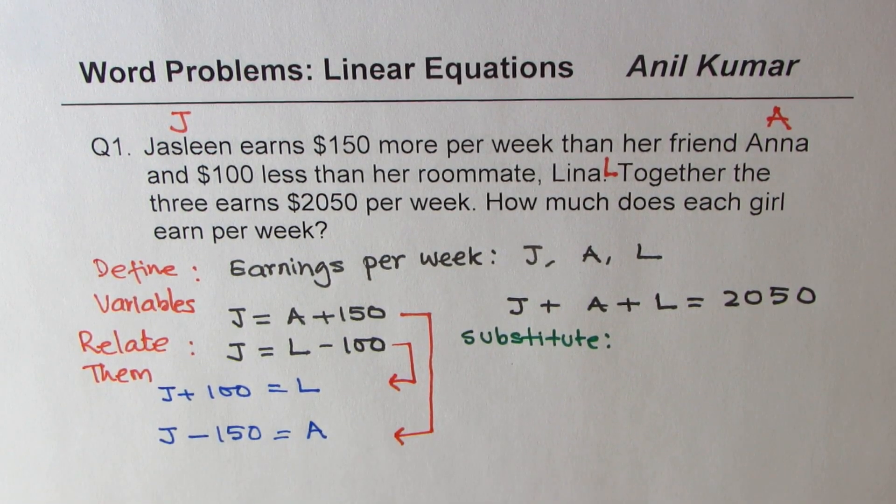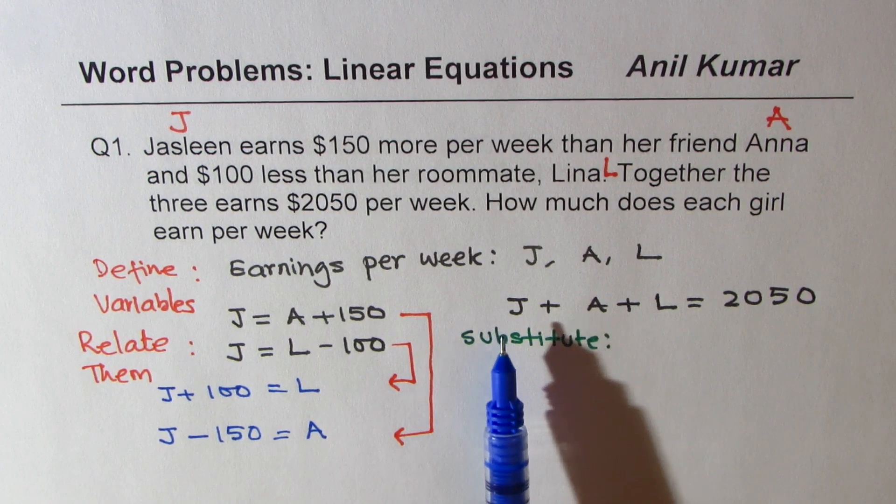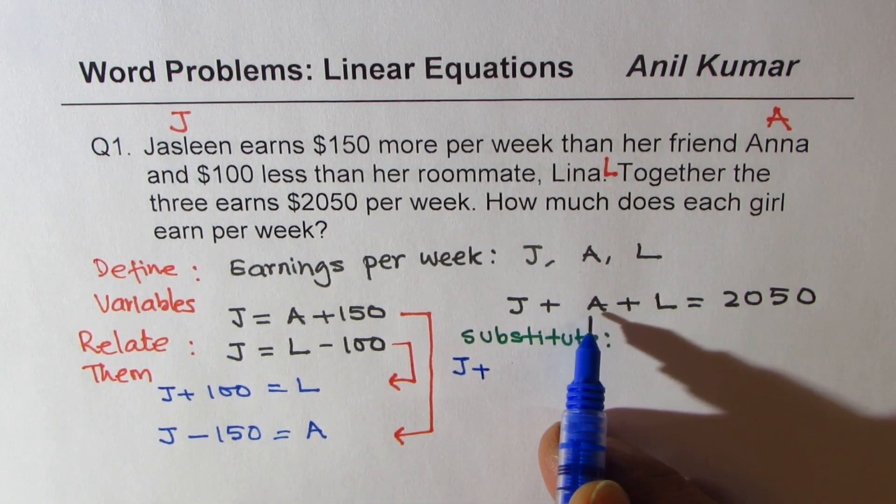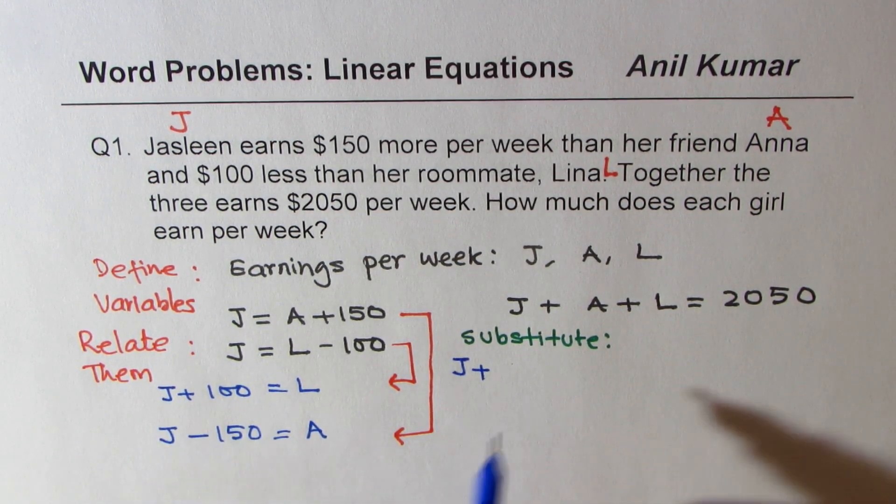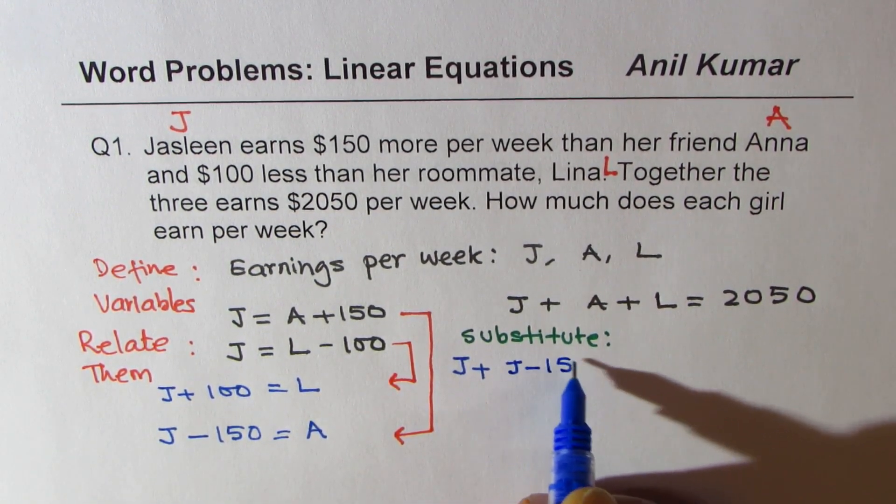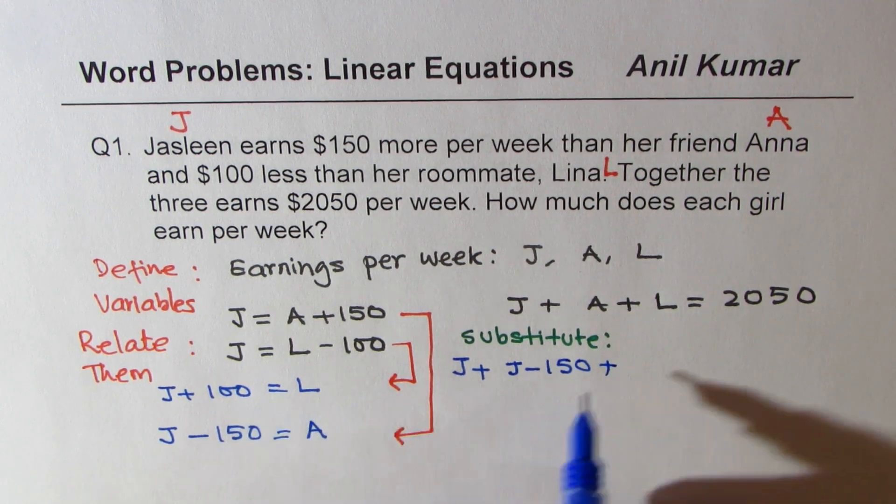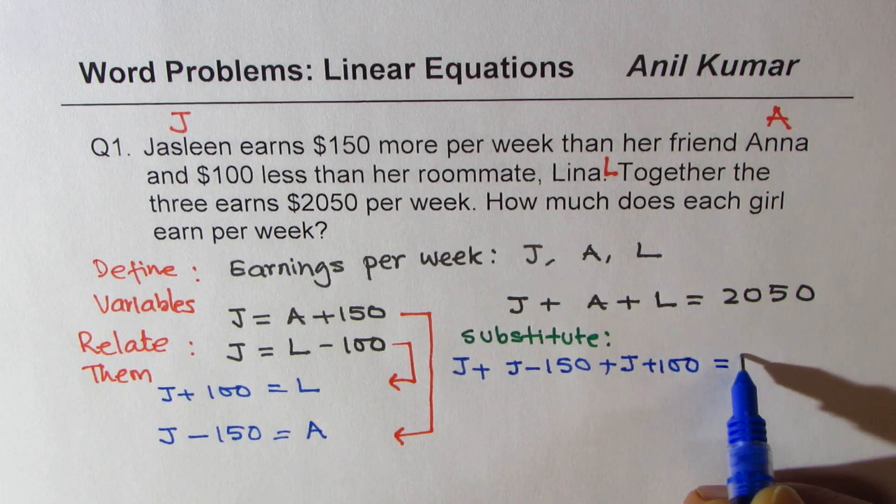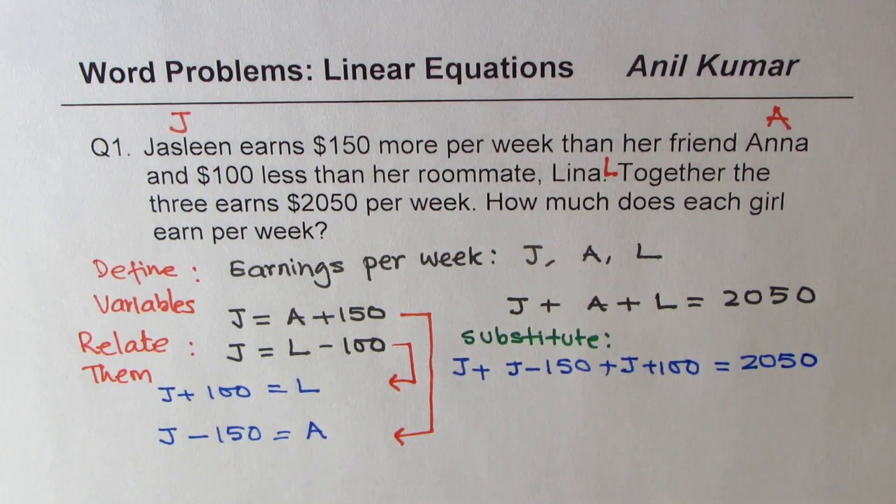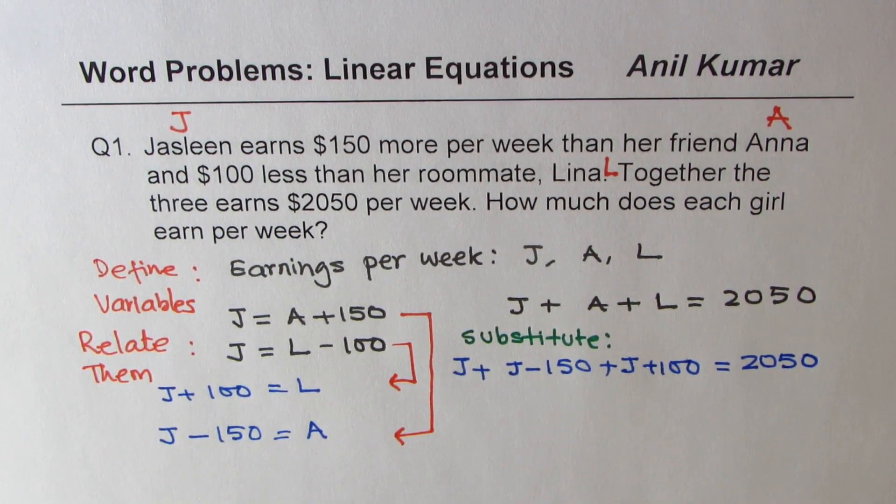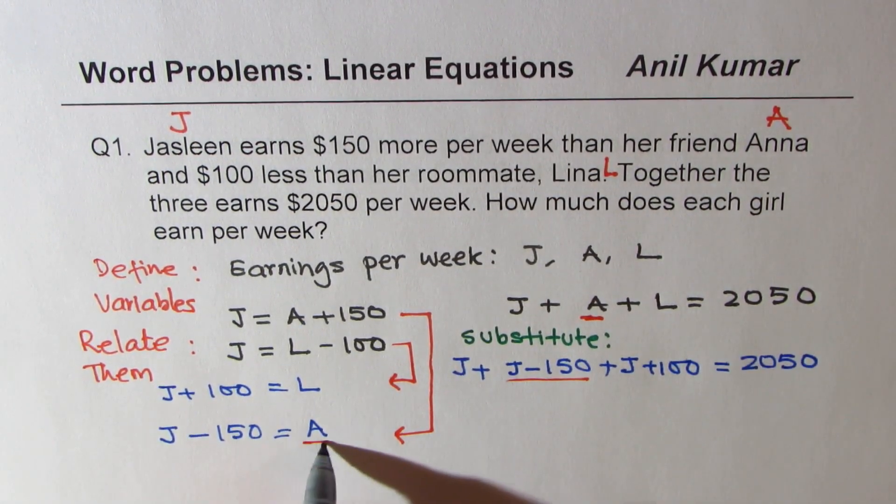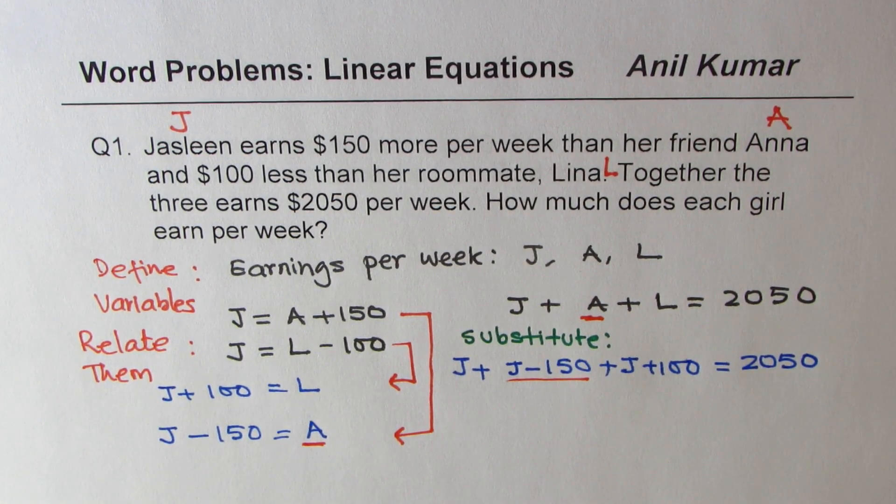So for J we'll just keep it as J. For A we'll write J minus 150. And for L we'll write J plus 100. And we have 2050. So we substituted A and we also substituted L.